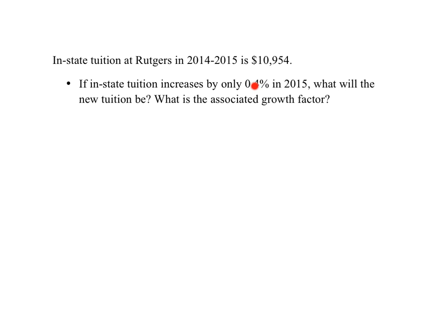First, we have to convert this percentage into decimal form. Whatever number appears before the percent sign has to be divided by 100 to be converted into decimal form. This means that the new number of dollars you have to pay in 2015 equals 0.004 times 10,954.